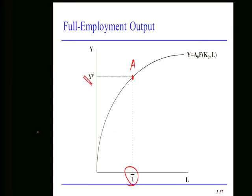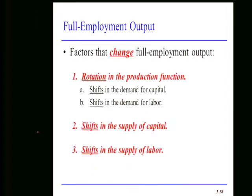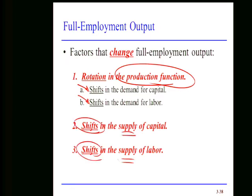This full employment output will be important later because it generates the long-run aggregate supply curve. If this is equilibrium in our labor market, we simply go up to the production function and there's our potential output. Potential output is not a fixed number — it changes. It changes whenever there is a rotation of the production function, which can shift the demand for capital, the demand for labor, or both, giving us different equilibrium levels. We can also have changes in the supply of capital or labor, which can change where full employment output is.